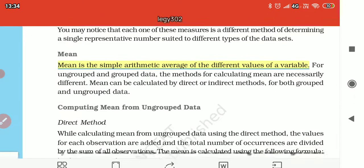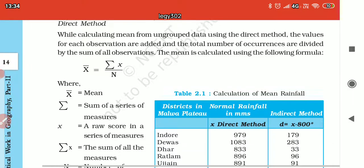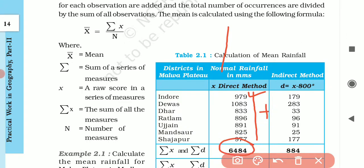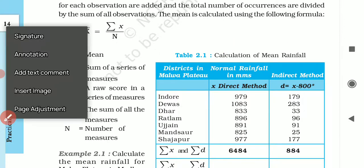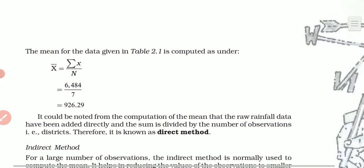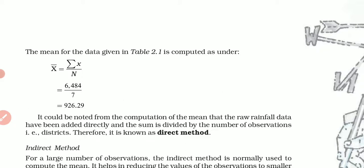First of all, we use the direct method. If we use this direct method, we know that we have simple average value. What do we do here? We add the data values: 979 and all the others. We have 6484. Now, here we have number of observations: 1, 2, 3, 4, 5, 6, 7. Seven districts. So we divide by 7.